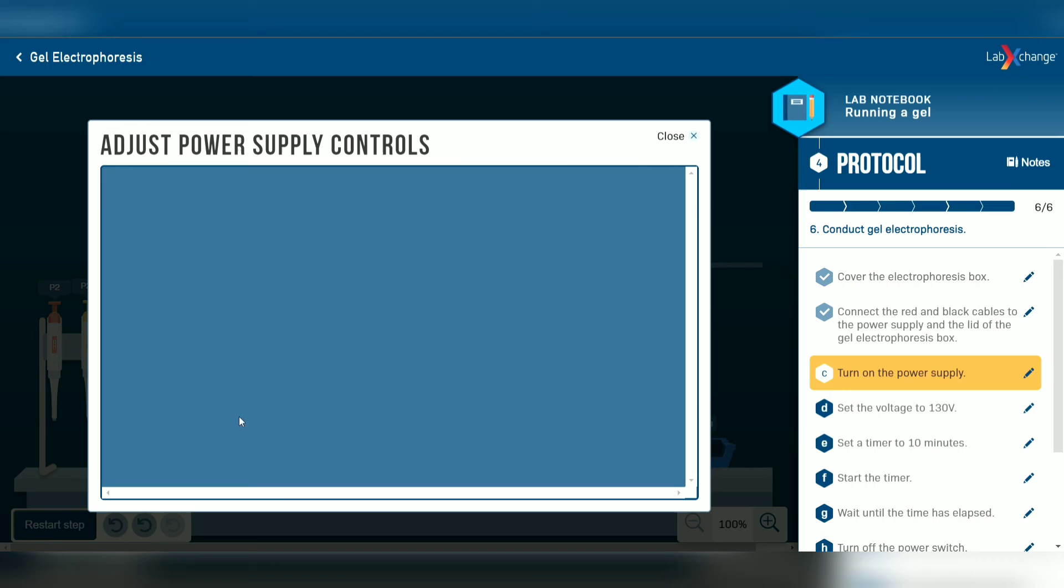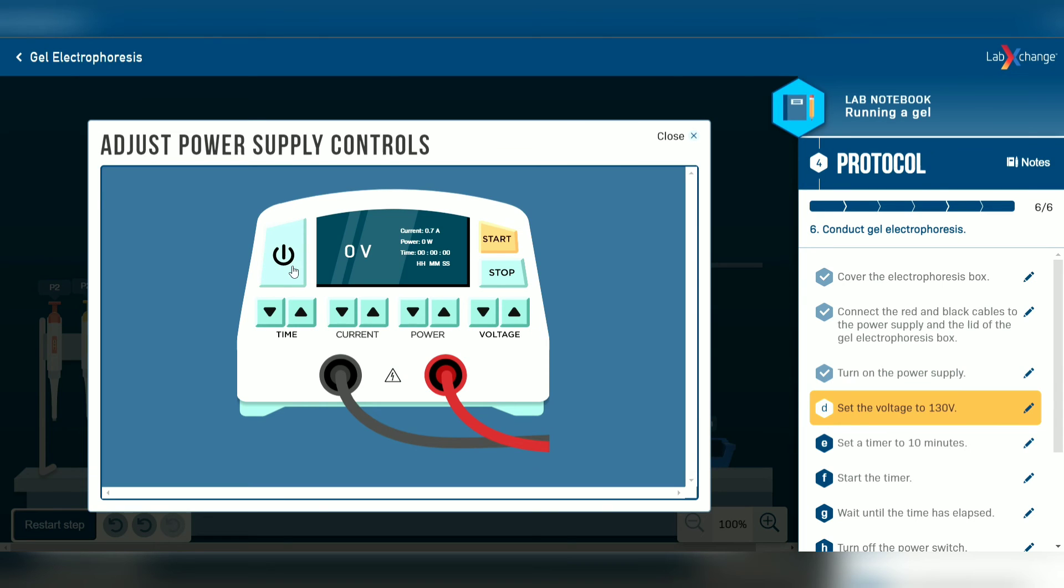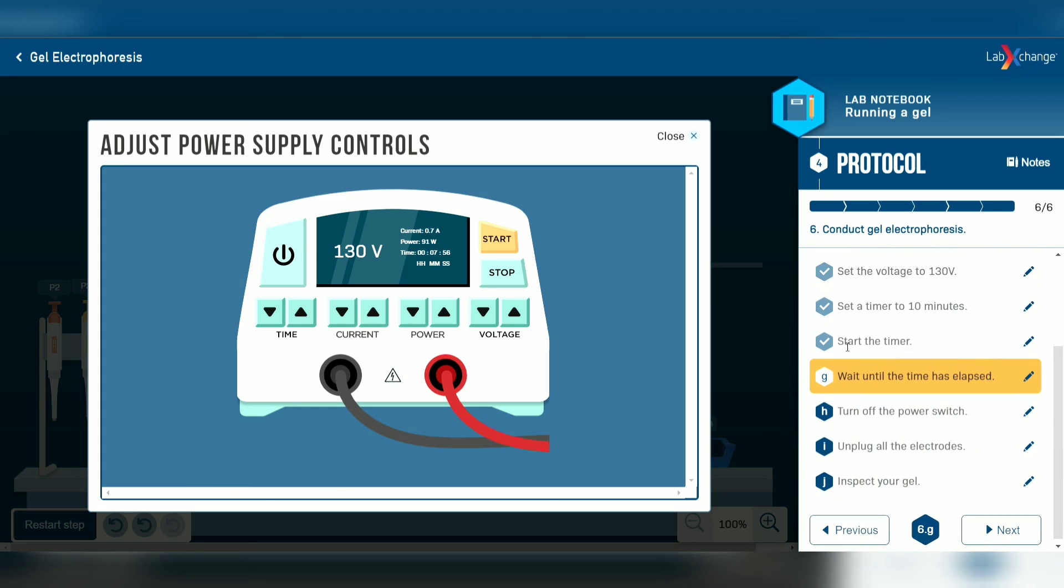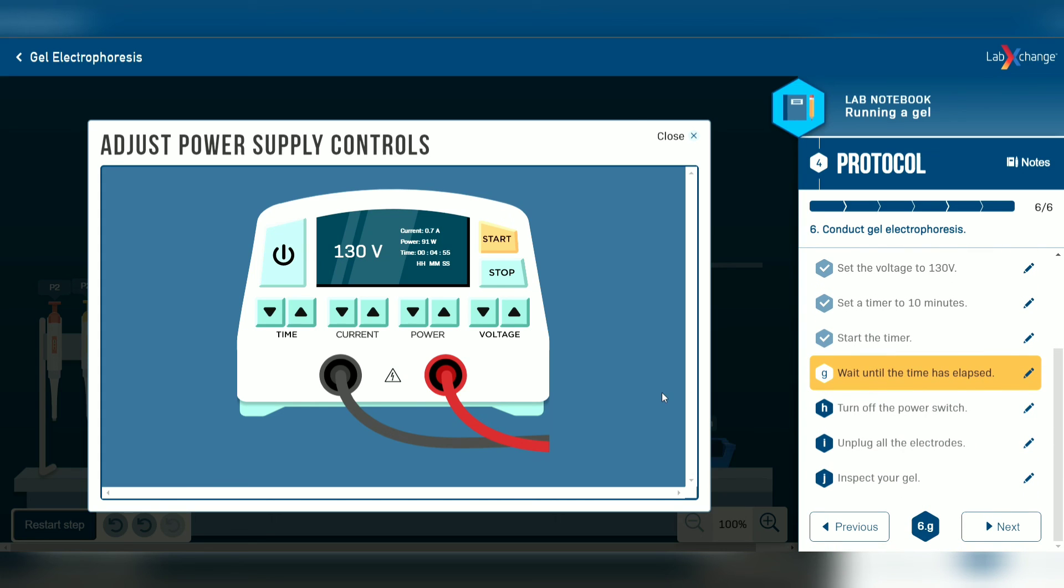Now turn on the power supply and set the voltage to 130 volts. Set the timer to 10 minutes and start the timer. And wait until the time has elapsed.